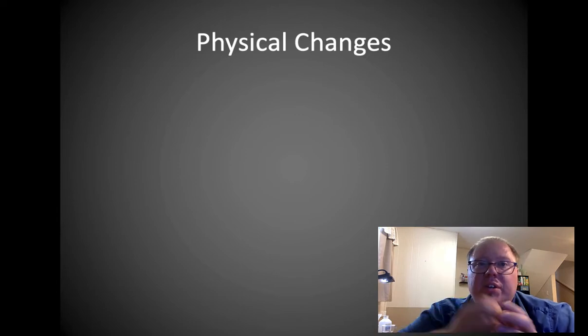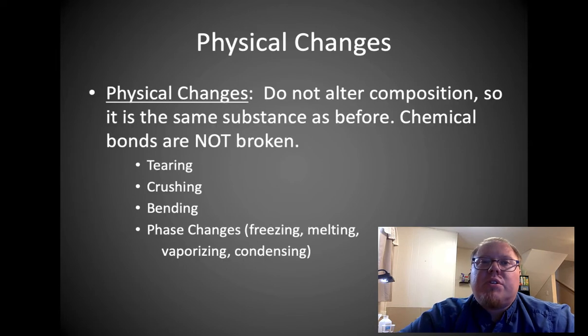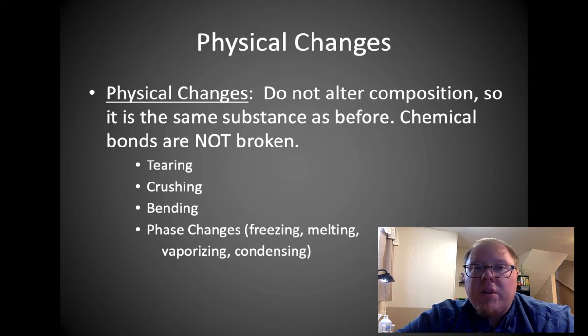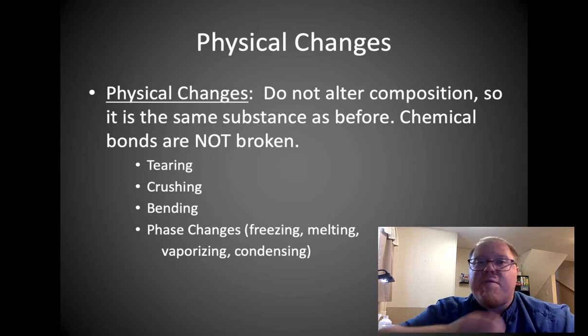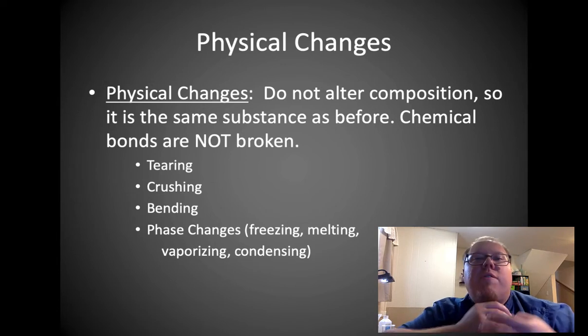When we talk about changing things, there are two types: physical changes and chemical changes. A physical change does not alter the composition. It's the same substance as before. No chemical bonds are broken, no new bonds formed. Examples include tearing, crushing, bending. Anything in which you alter it but do not change what it is. This also includes phase changes like freezing or melting. It's still the same thing afterwards but different in a way. This is what manufacturing processes deal with—they take metal, cut it, form it, but it's still the same material.